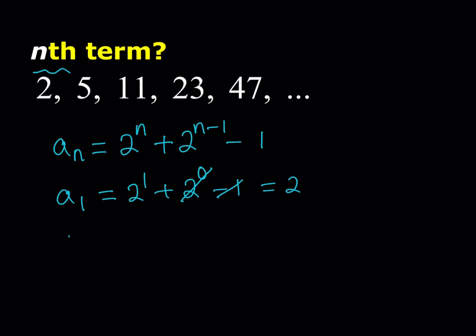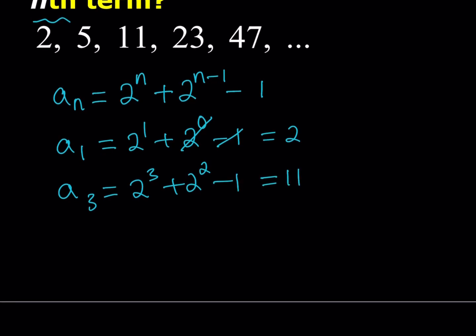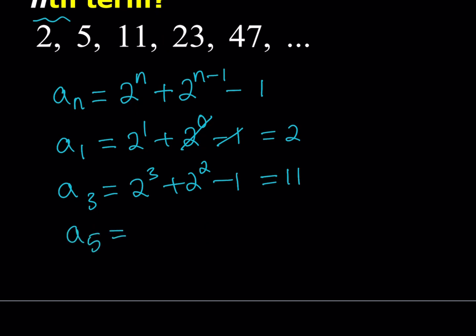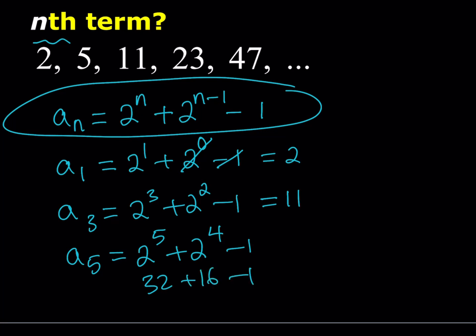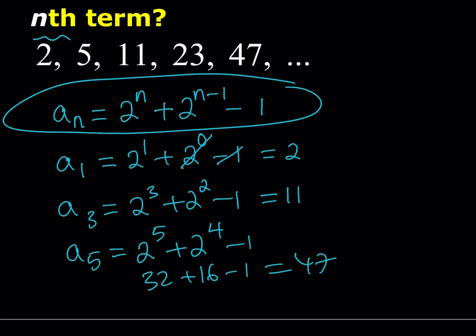Let's find the third one: 2 to the third plus 2 to the second minus 1. It's 8 plus 4, 12 minus 1 is equal to 11. Let's find the fifth one. If you replace n with 5 in this formula, then you would get 2 to the fifth plus 2 to the fourth minus 1. This is 32 plus 16 minus 1, and that is equal to 47. So this formula seems to work for at least these terms. But that's not just a proof, it's a claim.